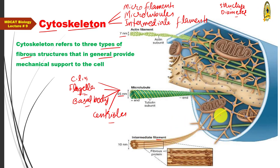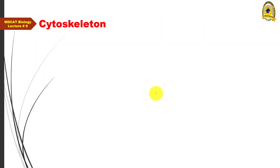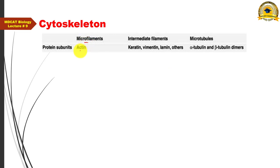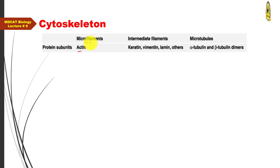Intermediate filaments form a network throughout the entire cytoplasm, and due to this network, a cell maintains a particular shape — they are mainly involved in providing mechanical support to the cell. Among the three skeletal fibers, intermediate filaments are the primary providers of mechanical support.